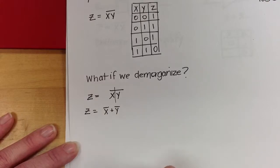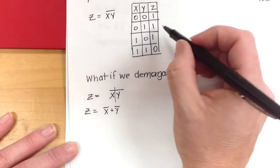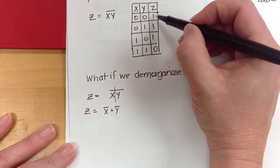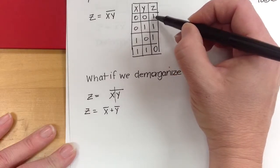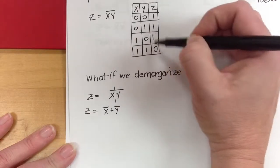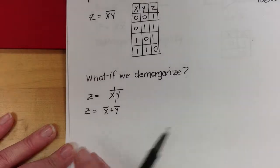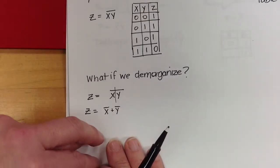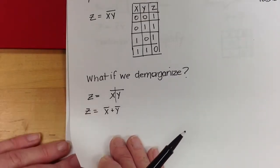Is that the same truth table? Look and see. Here I have NOT X, NOT Y — 1, yes, yes, no. So I still get the same truth table, and that's equivalent. Remember, that is DeMorgan's theorem.